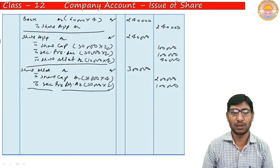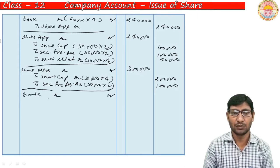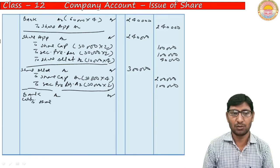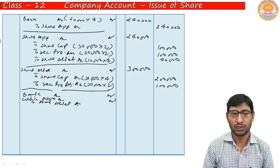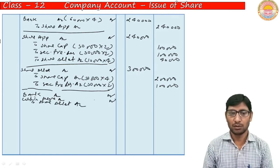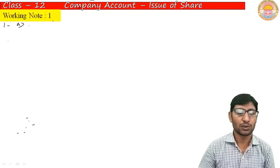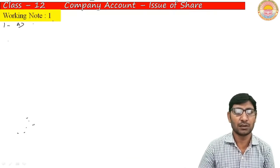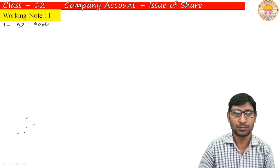Now for the allotment entry. Bank Account Dr., to Share Allotment Account. A question arises — should calls-in-arrears account be opened? Working notes: First, we find out the applied shares of Ram.